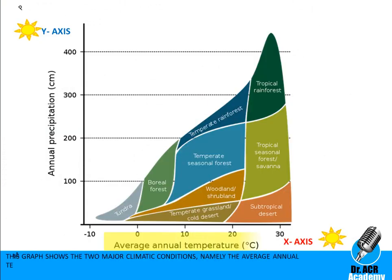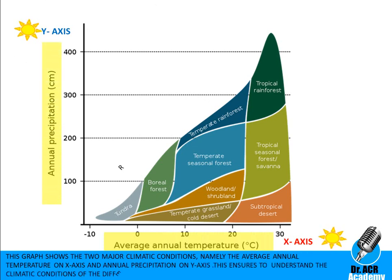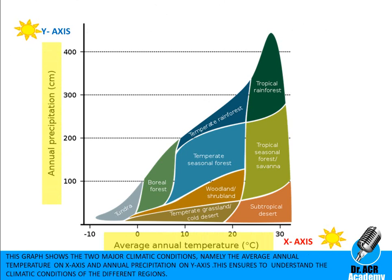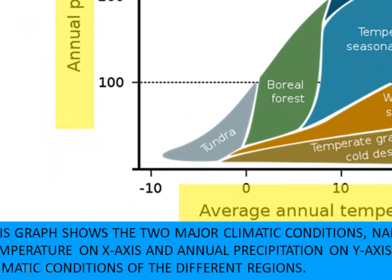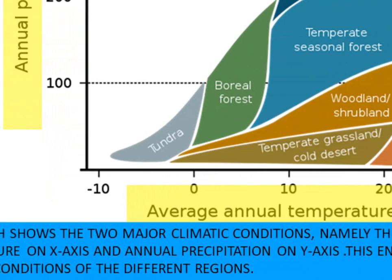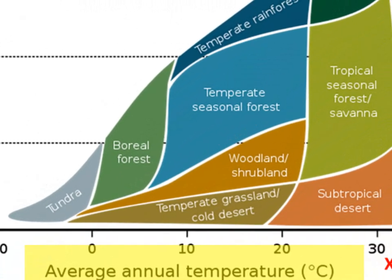This graph shows the two major climatic conditions — namely the average annual temperature on the x-axis and annual precipitation on the y-axis. This helps us understand the climatic conditions of different regions.